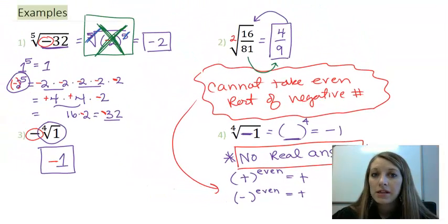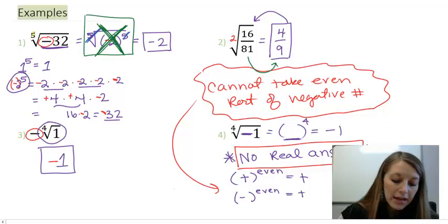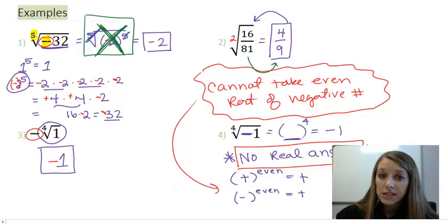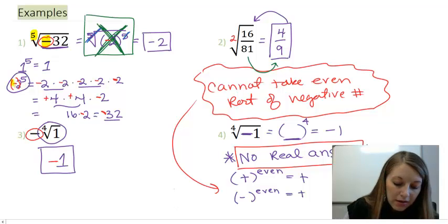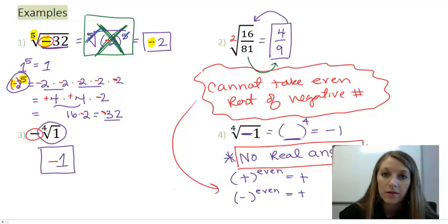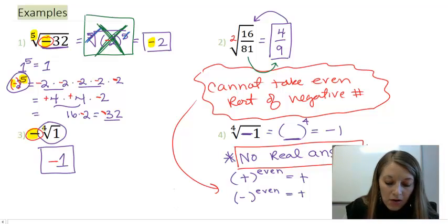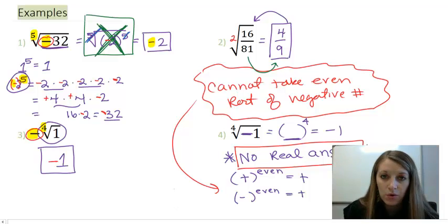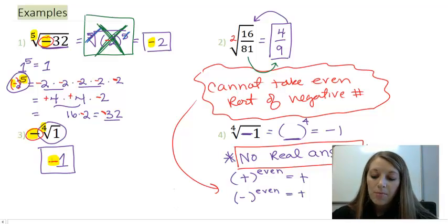Now, notice that we can have things very similar to this. I can have an odd root to a negative number. That's fine, because a negative, an odd amount of times, will end up to be negative. And I can have a negative on the outside of an even root, because that negative just copies down from step to step. But you cannot have anything like this, an even root to a negative base.